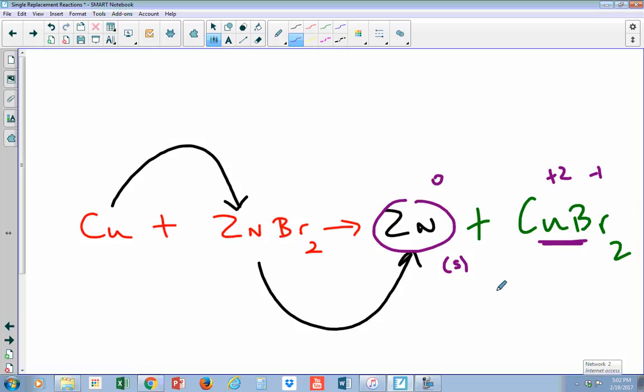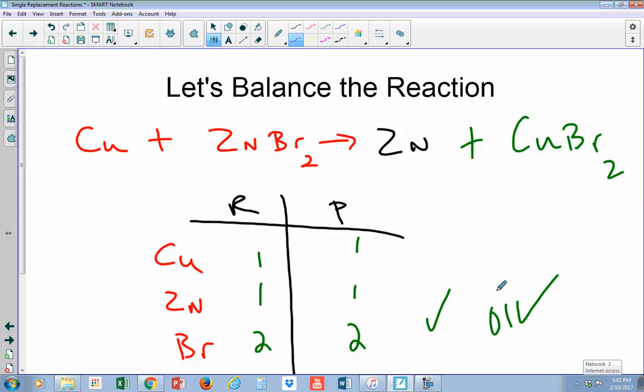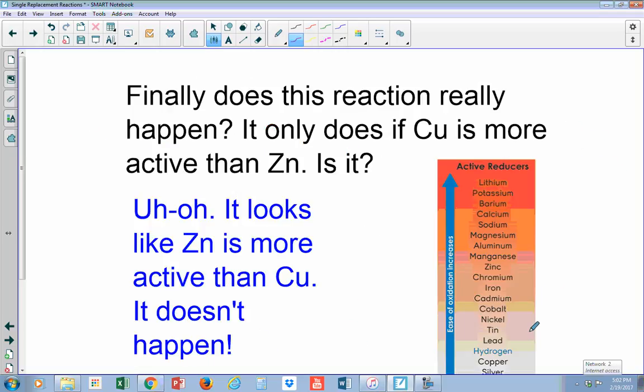So that was pretty easy to figure out in a single replacement reaction. Let's go ahead and balance it like we always did. Copper, zinc, bromide, what do I got, one, one, two, and over here one, one, two. Hey that was easy. It's already balanced. Don't need to do any work. Sometimes you just get lucky. Let's try another example here. Oh I'm sorry, before we go ahead and do that I wanted to mention one other important thing.